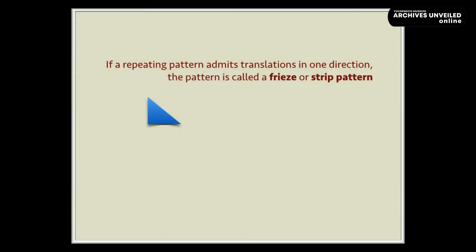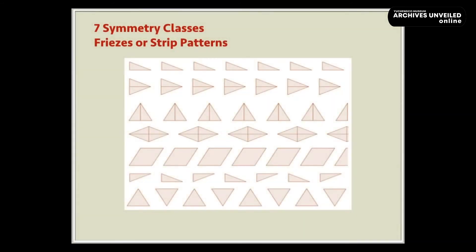If a repeating pattern admits translations in one direction, a pattern is called a frieze or a strip pattern. There are altogether seven symmetry classes of friezes or strip patterns.